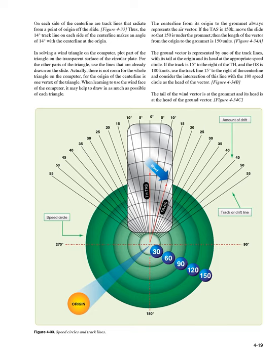On each side of the center line are track lines that radiate from a point of origin off the slide. Figure 4-33. The 14-degree track line on each side of the center line makes an angle of 14° with the center line at the origin. In solving a wind triangle on the computer, plot part of the triangle on the transparent surface of the circular plate; for the other parts, use the lines already drawn on the slide. The center line from its origin to the grommet always represents the air vector.